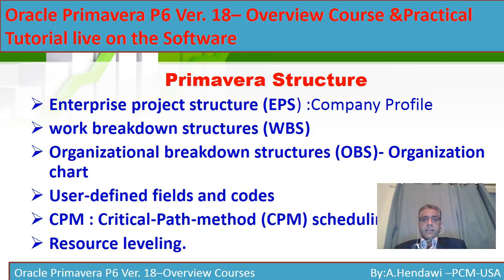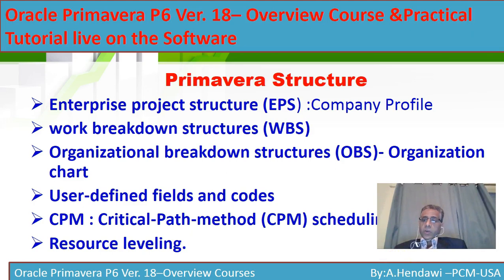Primavera has an enterprise project structure called EPS, where the company structure is divided into many subsidiaries or companies. In Primavera you also have the Work Breakdown Structure, WBS, which shows how you divide your project into more manageable components. It also has an Organizational Breakdown Structure, OBS, where you add the staffing and organization chart of the company.